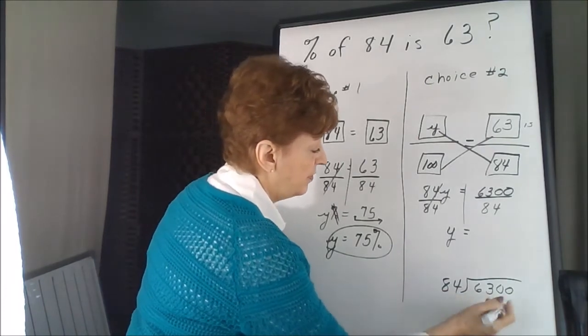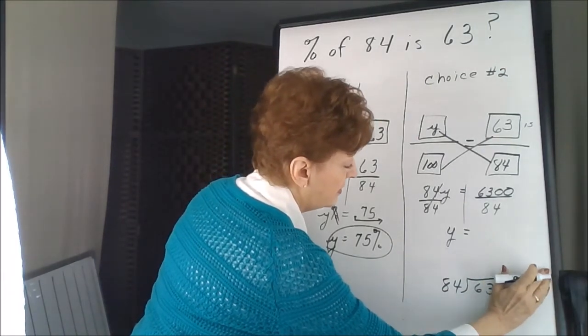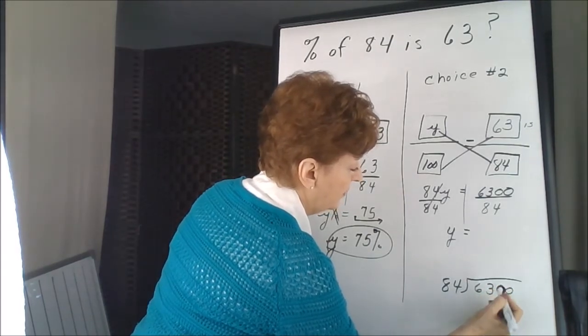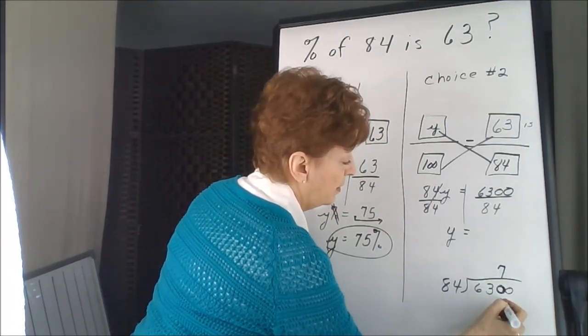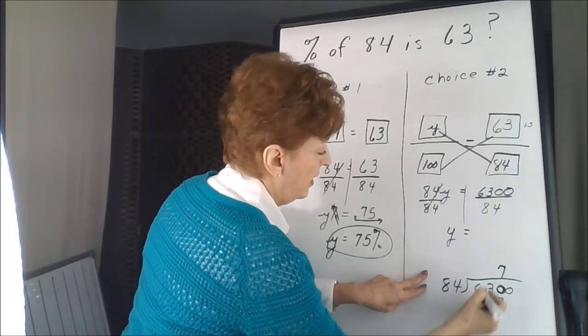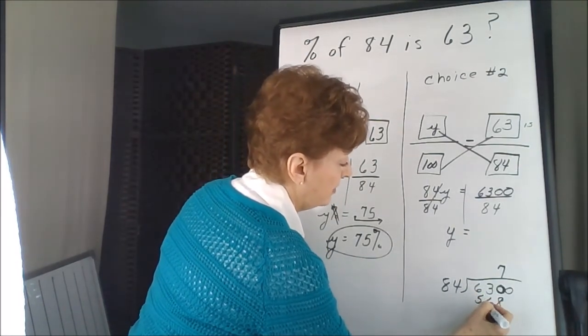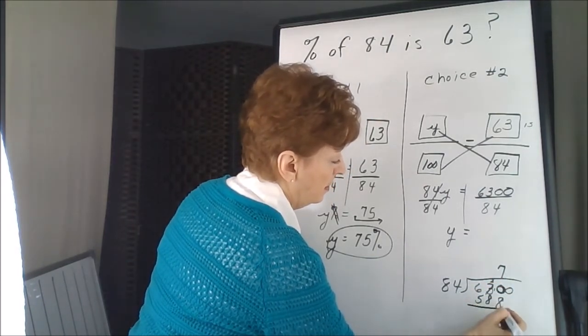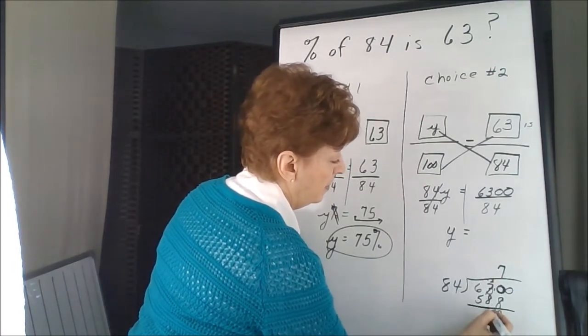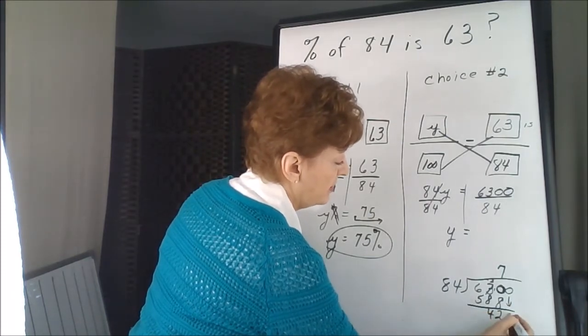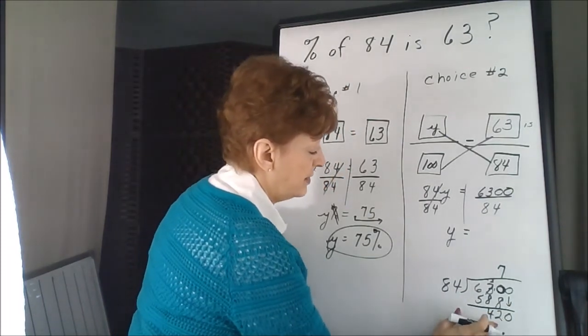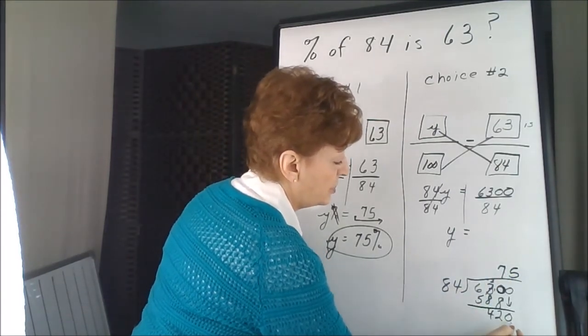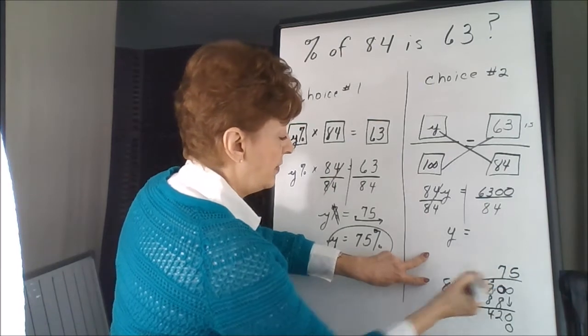84 divides into 630, 7 times we got 28 and 58. 2, 4, bring down our next 0. 8 divides into 42, 5 times. 5 times 4 is 20, 5 times 8 is 42.